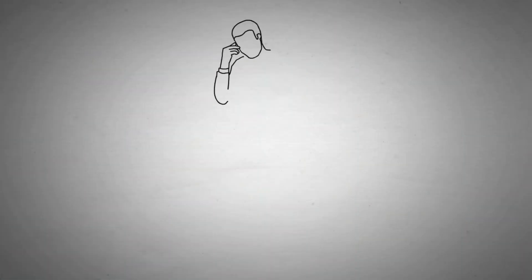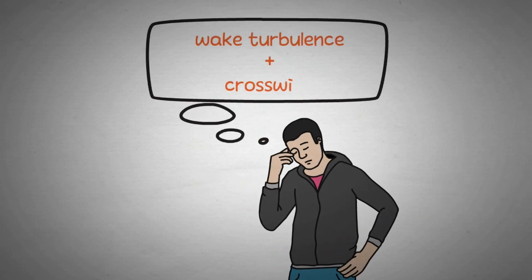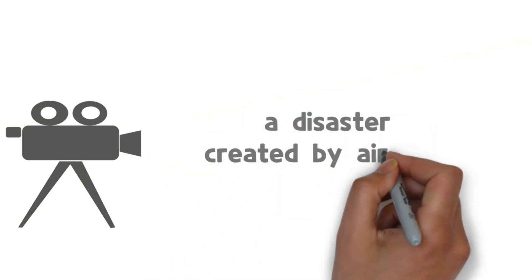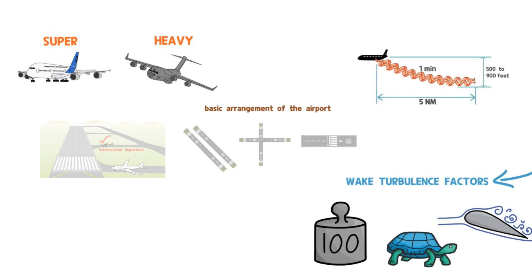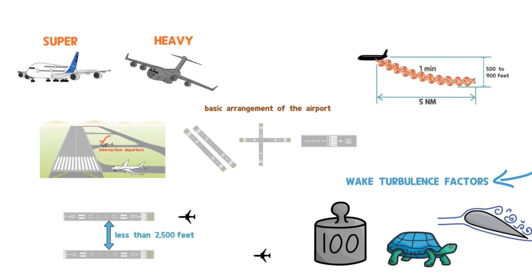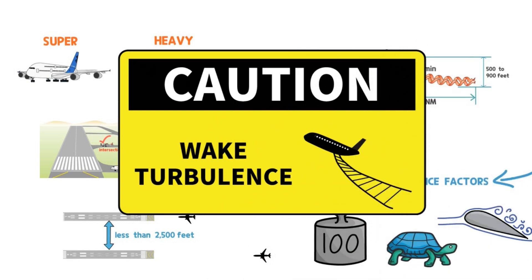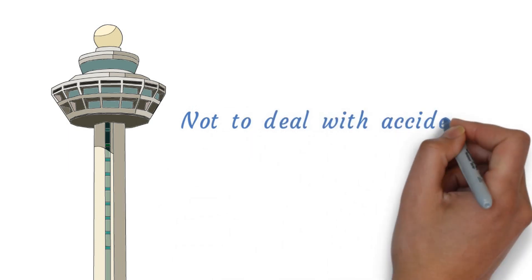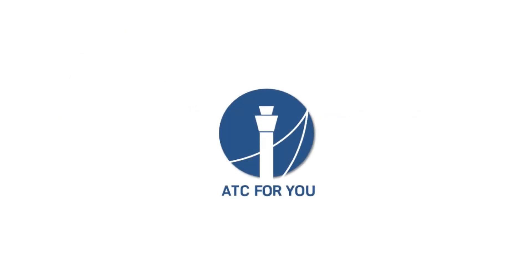This accident clearly shows why we must be alert when wake turbulence and crosswind come together. That's the end of the story of wake turbulence — a disaster created by aircraft. I hope this video helps you respond correctly to traffic situations related to wake turbulence and prevent tragedies such as the accident introduced earlier. Why does the controller exist? Not to deal with accidents — it is to prevent accidents. ATC for you.